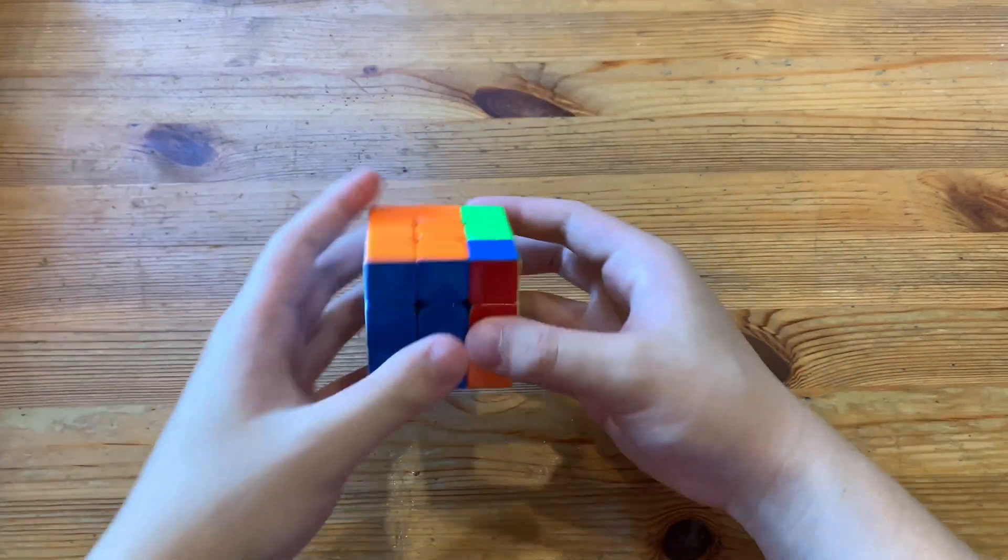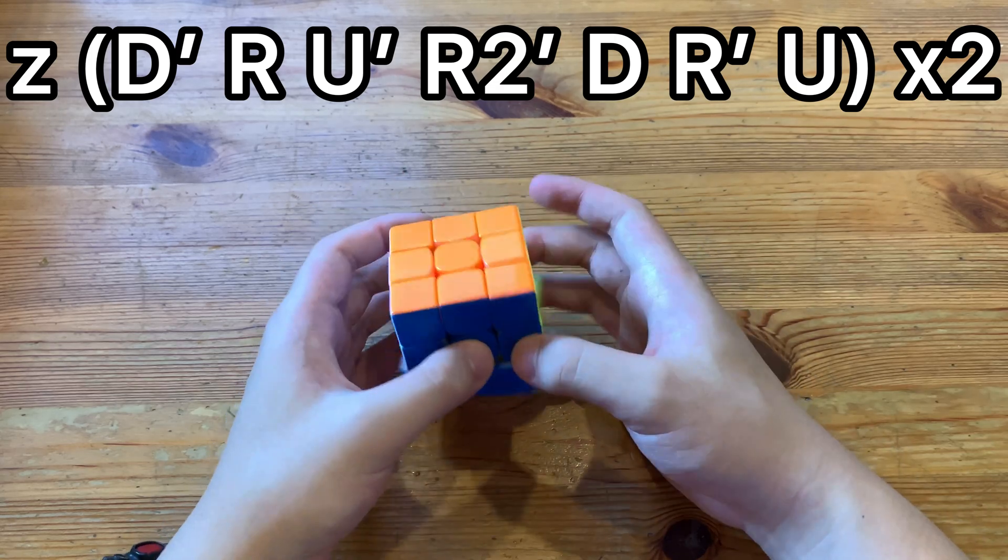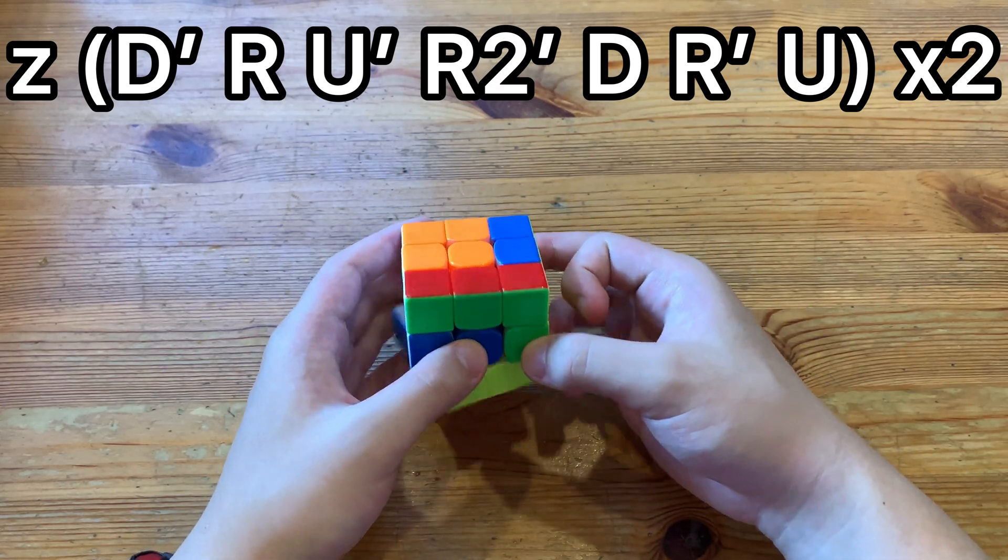And here's the alternative algorithm. You rotate here and do D prime R U prime R2 prime D R prime U, and then the same thing again.